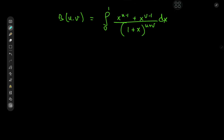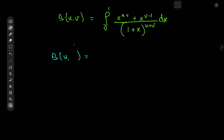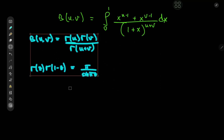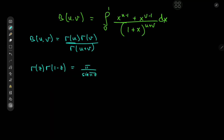Now you all know how much I love Euler's reflection formula for the gamma function. So let's make use of this integral form for the beta function to derive another integral form for Euler's reflection formula. The first thing we need is the relationship between the beta and the gamma functions: beta(u, v) equal to gamma(u) times gamma(v) divided by gamma(u plus v). And the reflection formula is of course gamma(z) times gamma(1 minus z) equal to pi divided by the sine of pi times z. So all we need is u equal to z and v equal to 1 minus z.